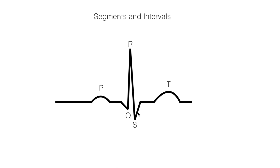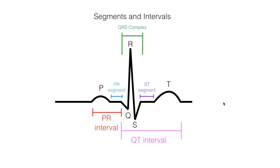Now let's talk about the segments and intervals in the EKG diagram. There are several — the PR interval, the PR segment, the QRS complex, the ST segment, and the QT interval. But to make it easy, we are just going to focus on the PR interval and the QRS complex, as these are all we need to do the EKG interpretation. The other segments are important too, but we don't need them to interpret an EKG faster and more efficiently.